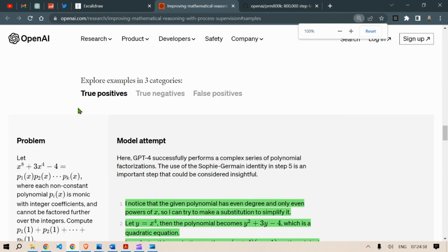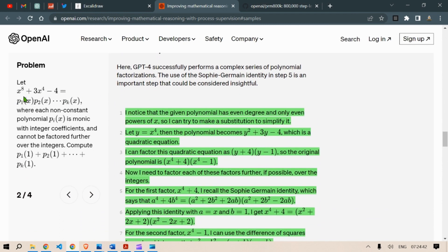For example, here, this is the problem. x to the power 8 plus 3x to the power 4 minus 4 is equal to p1(x), p2(x), tilde to pk(x), where each non-constant polynomial p(x) is monic with integer coefficient and cannot be factored further over the integers. Basically, these terms are in the simplest forms, and they cannot be factorized further. Now, we want to compute p1(x) plus p2(1), where x is 1. We want to compute p1(1) plus p2(1) plus pk(1). So, GPT-4 successfully performs a complex series of polynomial factorization. The use of Sophie Germain identity in step 5 is an important step. So, let's look at the solution, how it is able to clearly think step by step, and this is an example of a successful case.